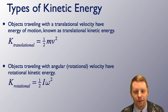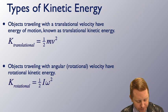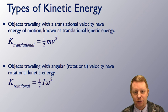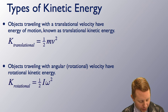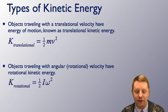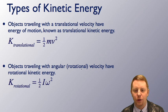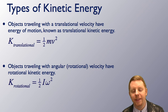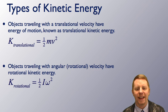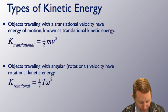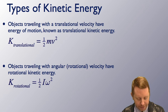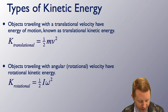Objects traveling with a translational velocity have energy of motion known as translational kinetic energy, where the translational kinetic energy is one-half mass times the velocity squared. Objects traveling with angular or rotational motion also have energy of motion — rotational kinetic energy — which is equal to one-half I omega squared: one-half the moment of inertia times the square of the angular velocity.